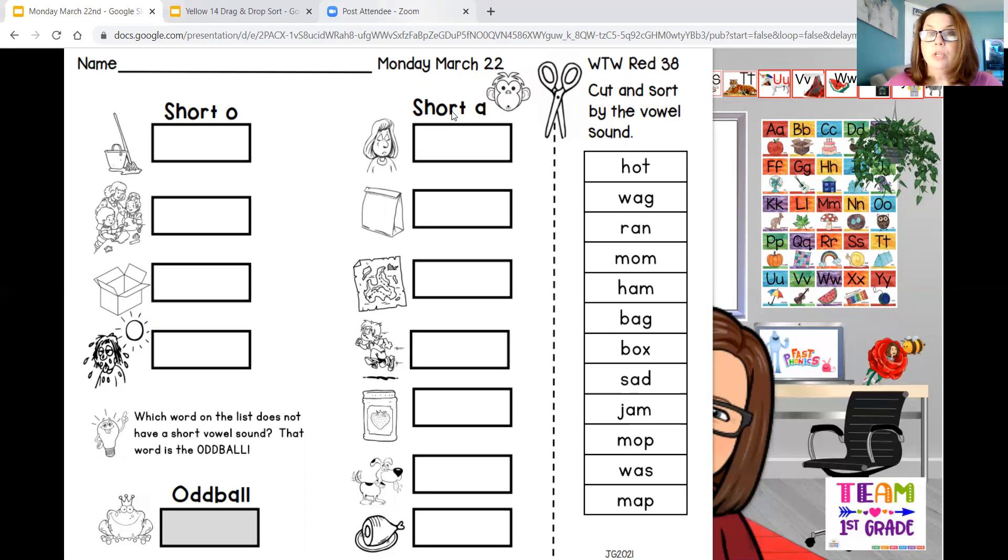All right, our next word is ran, R-A-N. So ran is another short A word that we've seen before. We've seen this in our phonics work, we've seen it in our early word family words work. So these are words you're familiar with. That's going to be in the short A column, and you can find the picture of ran.